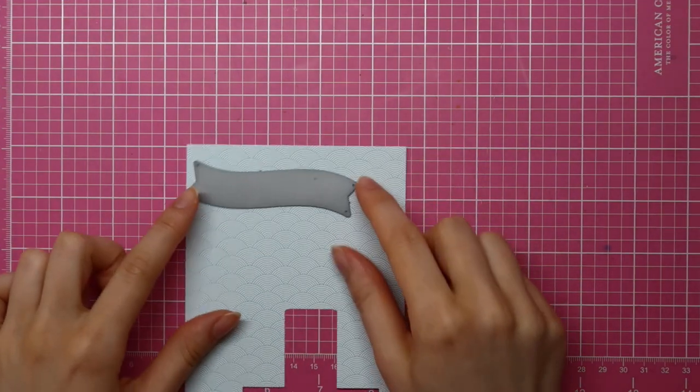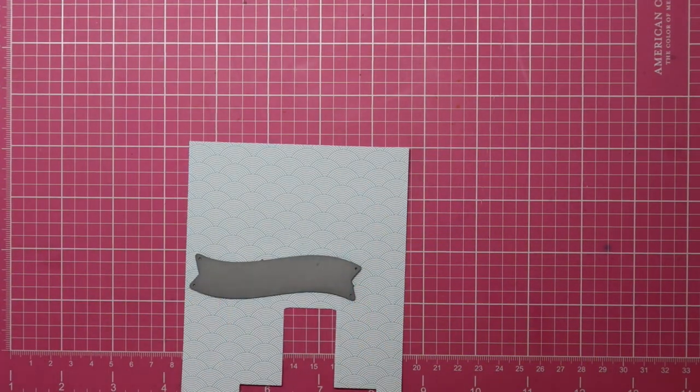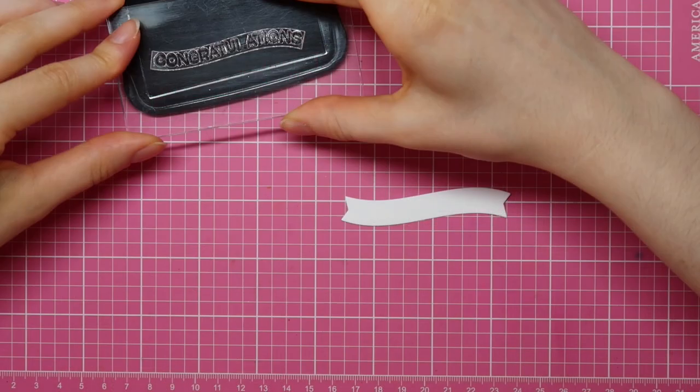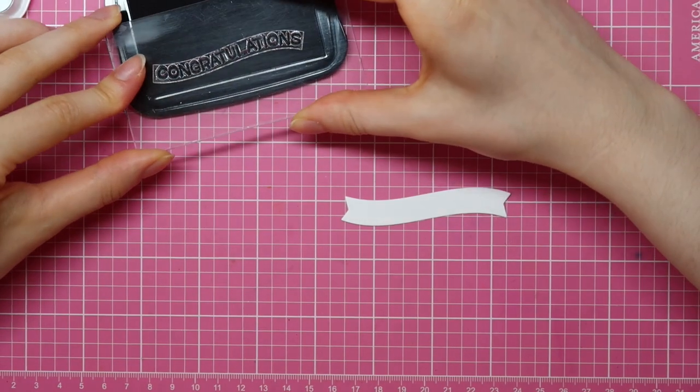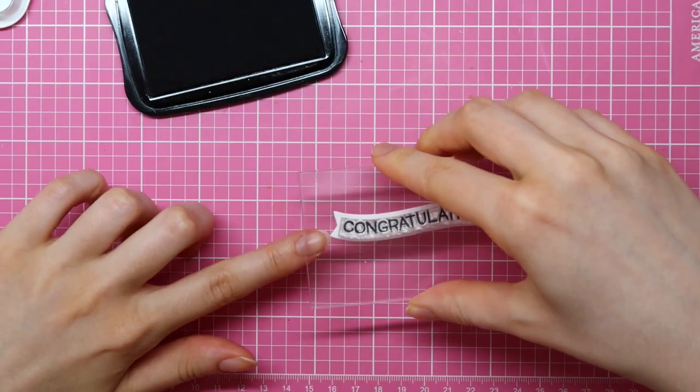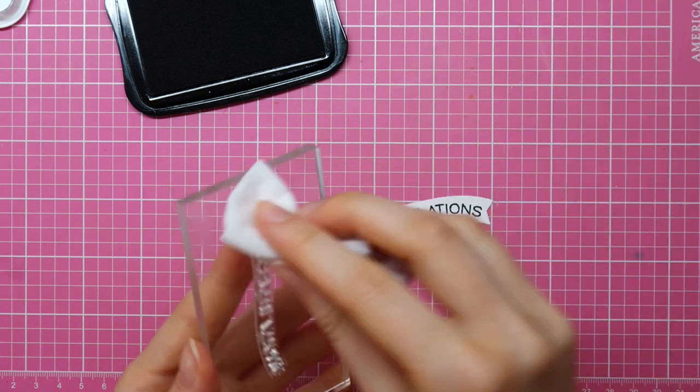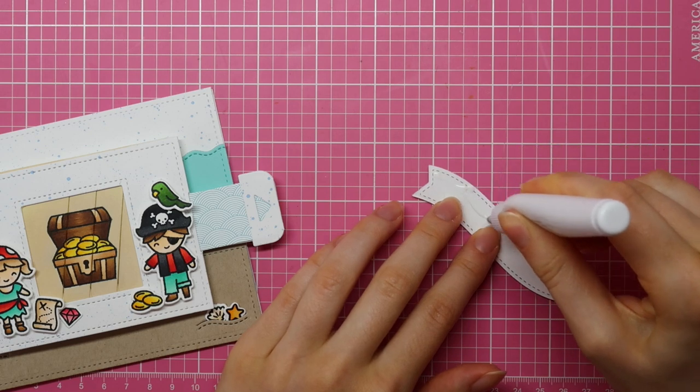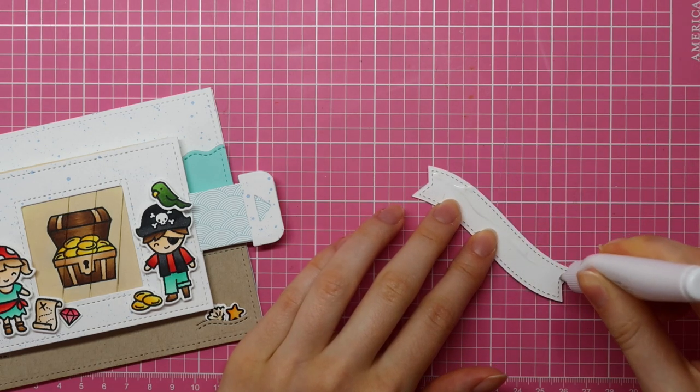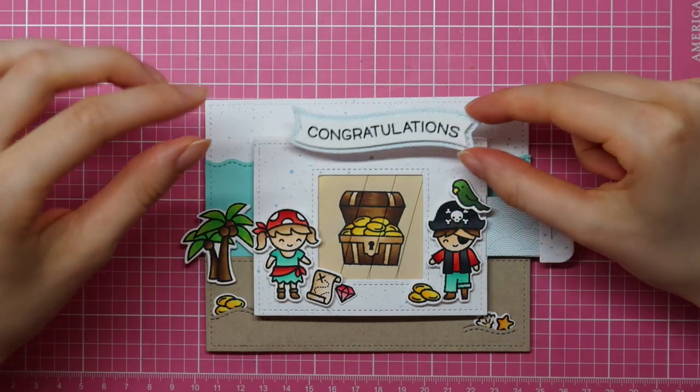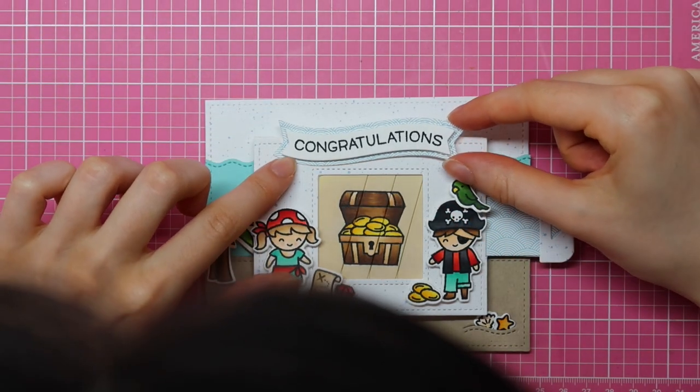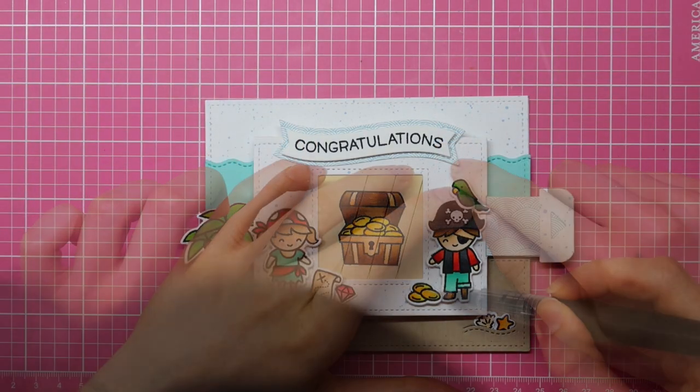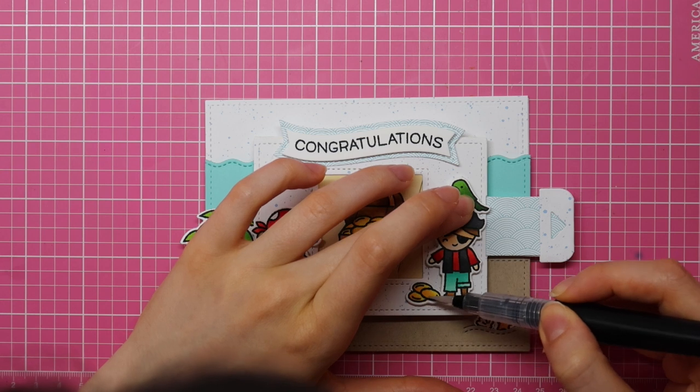Now that I adhered all of my images, it's time to create a sentiment banner. This is also from a die set from Lawn Fawn. I believe it's called the Wavy Banner die set or something like that. I'm also using one of the sentiments from the Wavy Banner Greetings stamp set from Lawn Fawn. I stamped that on my white banner. I adhered the white banner to my patterned paper banner using foam adhesive and then I adhered the finished banner to my card using the Tonic Nuvo Smooth Precision Adhesive Pen.